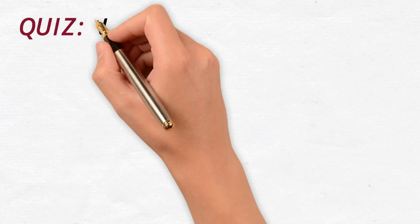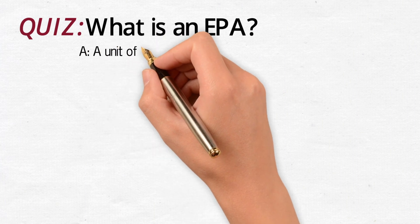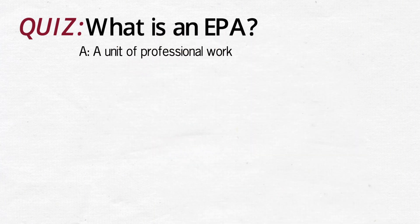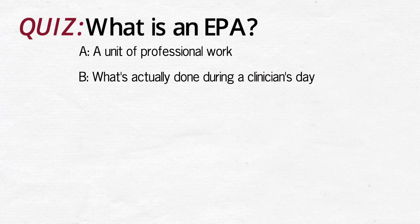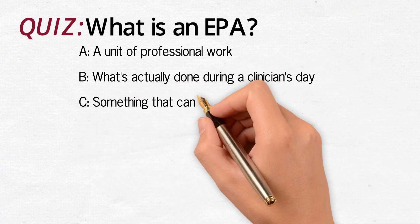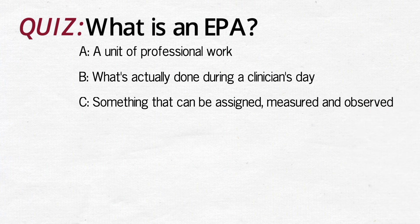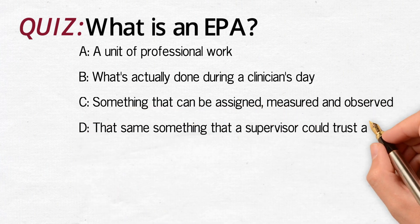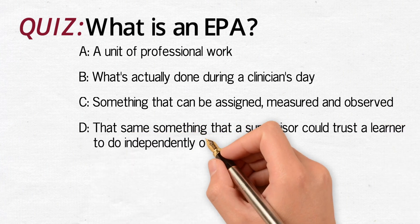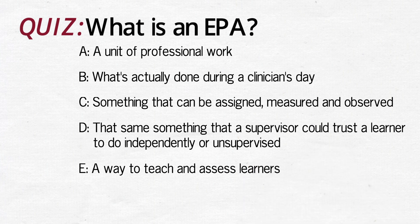Here's a multiple choice question. What is an EPA? A: a unit of professional work. B: what's actually done during the clinician's day. C: something that can be assigned, measured, and observed. D: something that a supervisor could trust a learner to do independently or unsupervised. E: a way to teach and assess learners. F: all of the above.